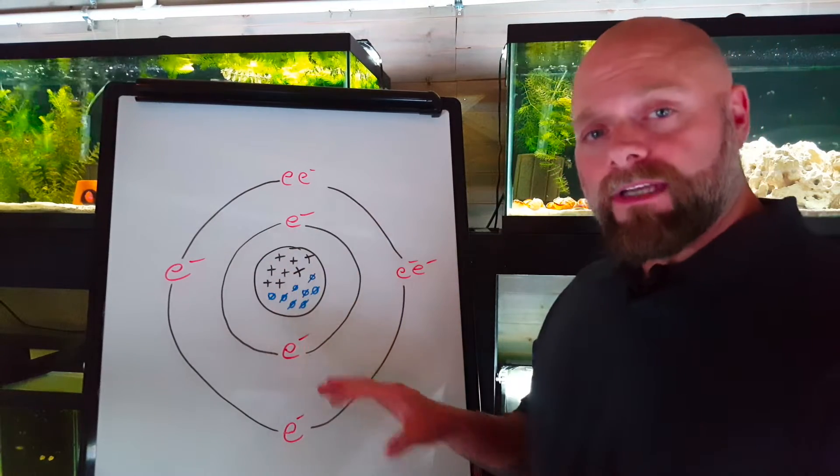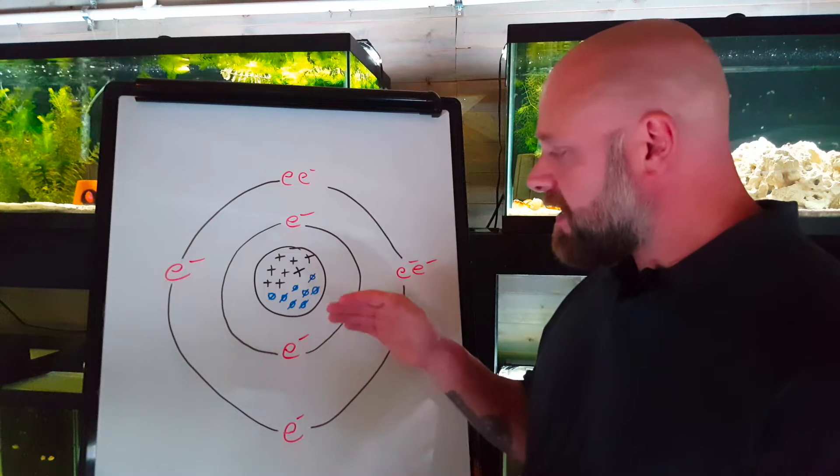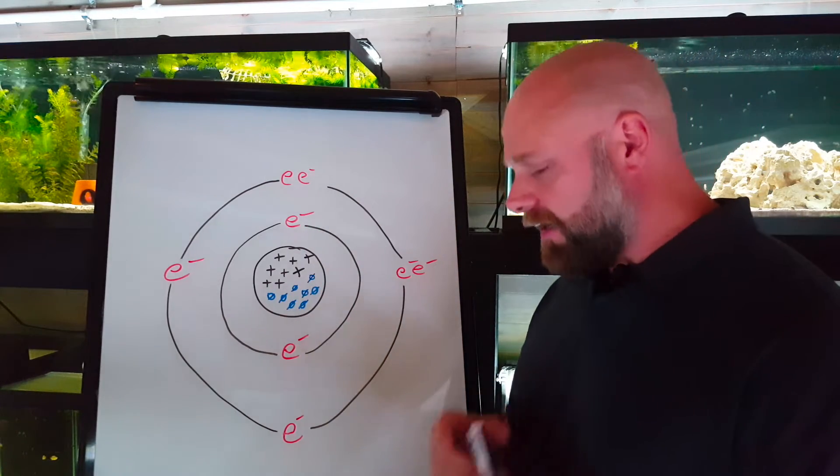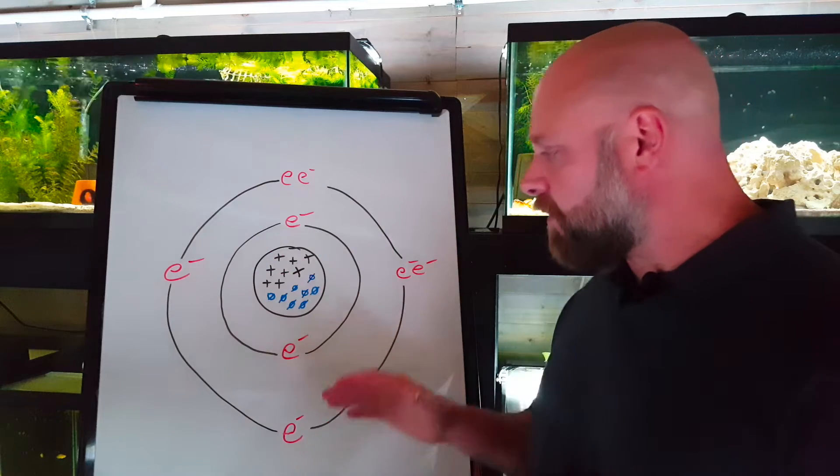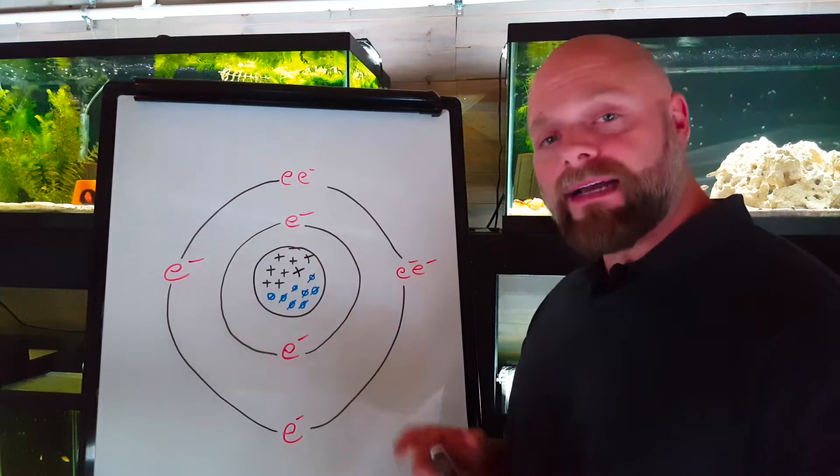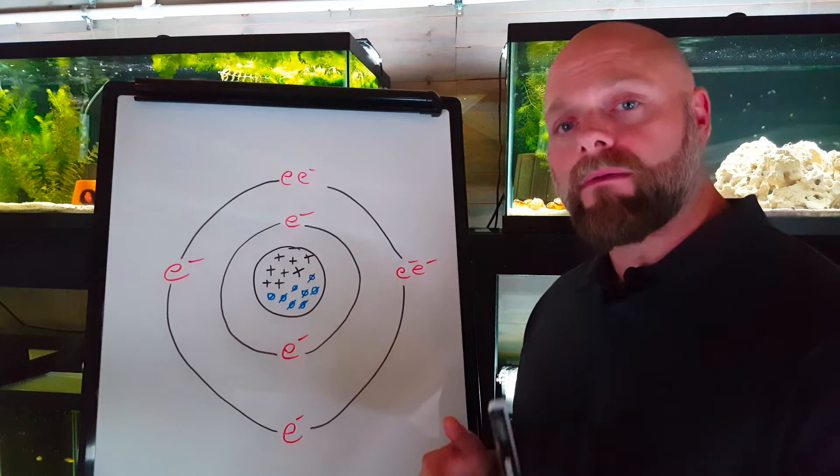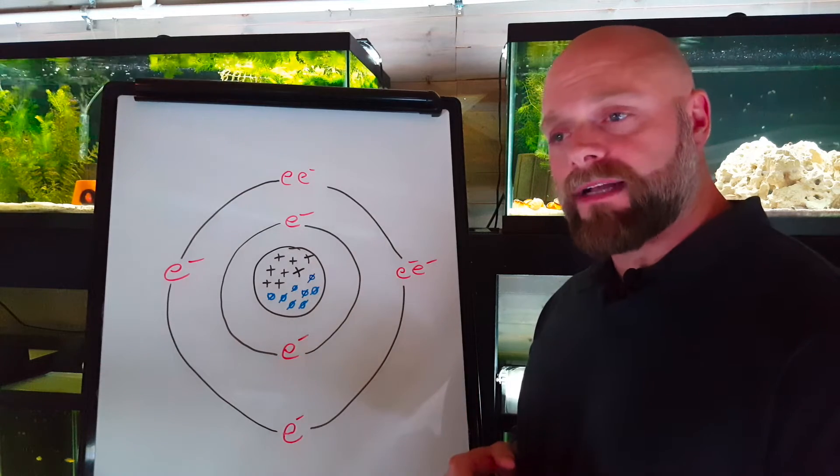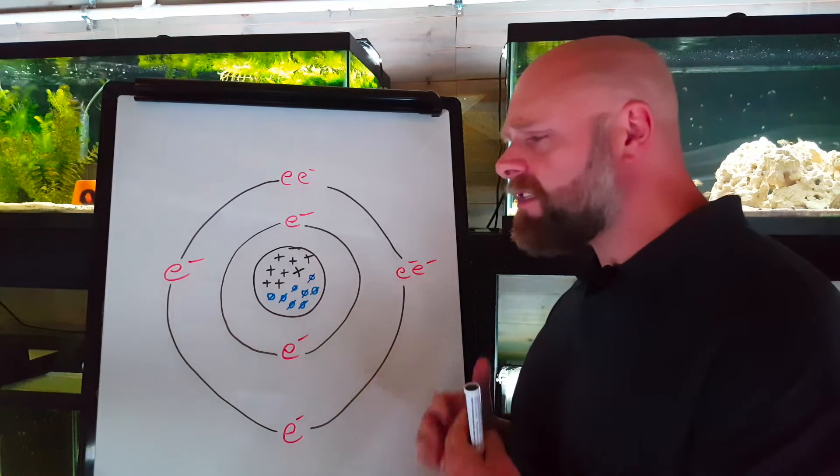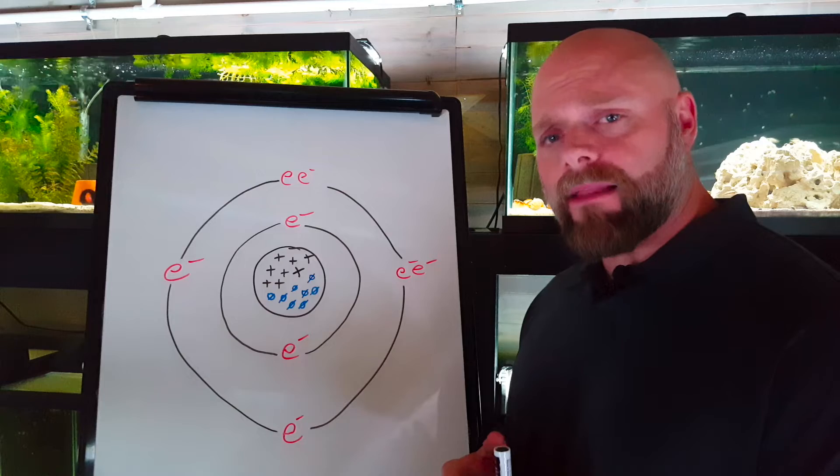Orbiting around the nucleus, we have electrons. Oxygen happens to have two electrons in an inner shell and then six more in an outer shell. The number of electrons and the number of protons in this example are matching: eight protons, eight electrons. The electrons have a negative charge.